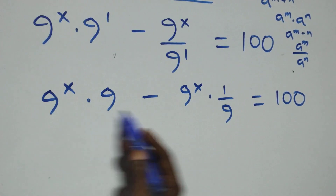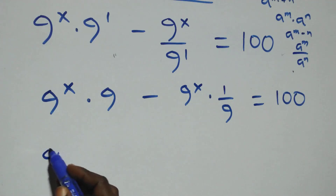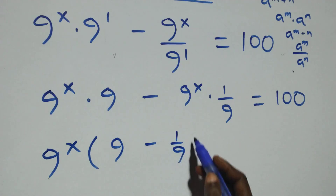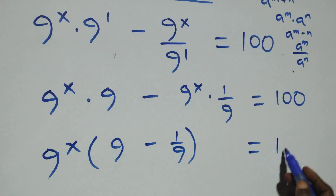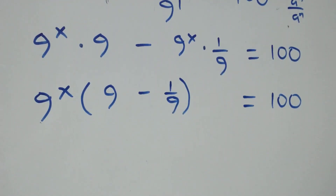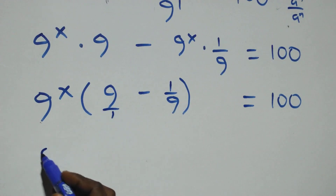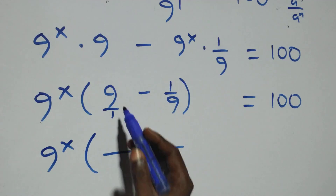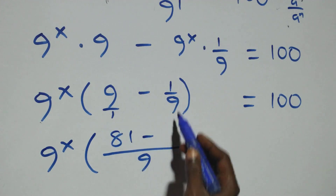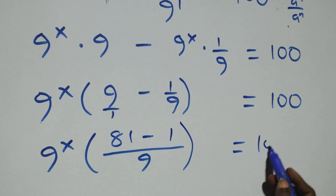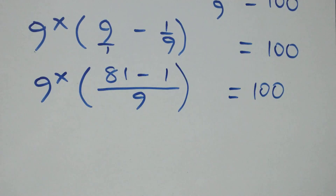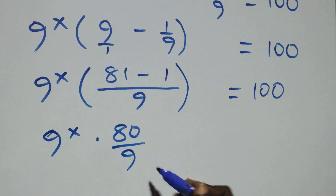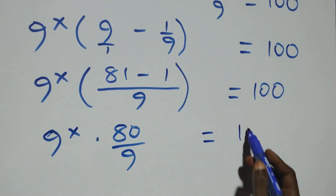Then here we have 9 raised to power x. We factor it out and we have 9 raised to power x into brackets — 9 raised to power 1 minus 1 over 9. We bring this together as a fraction: that's 9 over 1. Then 9 times 9 is 81, minus 1 times 1 is 1, close brackets equals to 100. This becomes 9 raised to power x times 80 over 9 equals to 100.